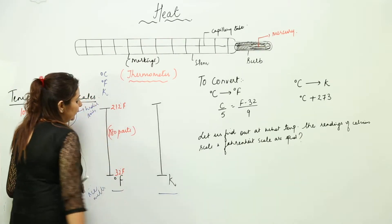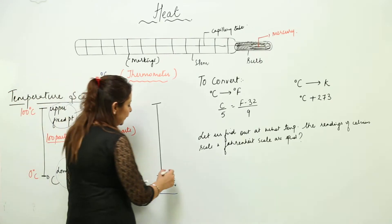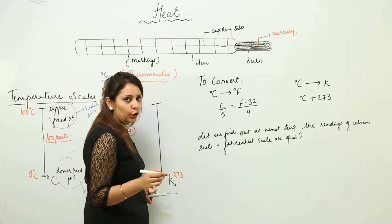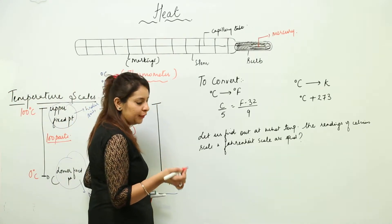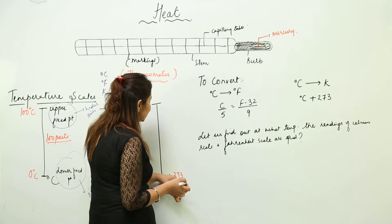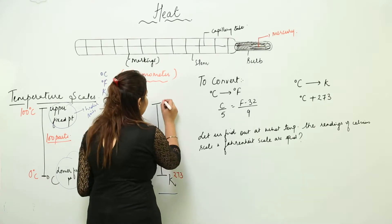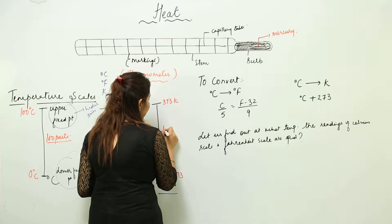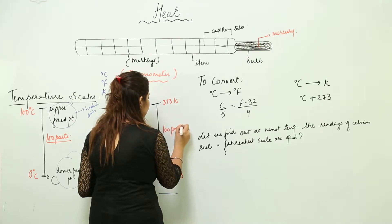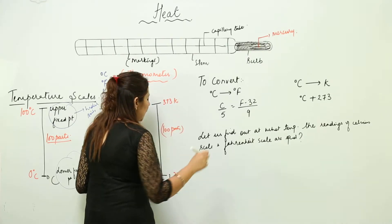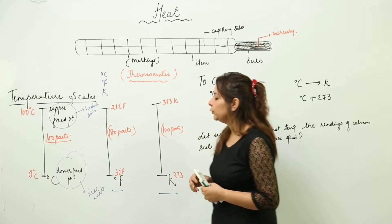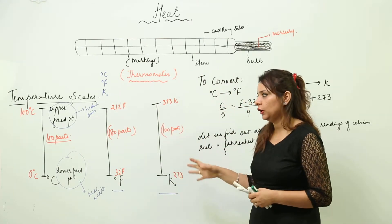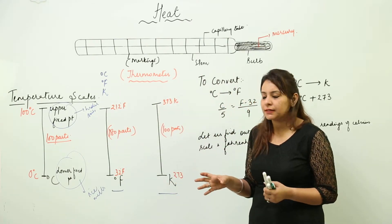For the Kelvin scale, the lower fixed point at which ice melts is 273 Kelvin, and the upper fixed point is 373 Kelvin. So again it is divided into 100 parts. These are the temperature scales, and you need to remember the lower fixed point and the upper fixed point on all of these scales.